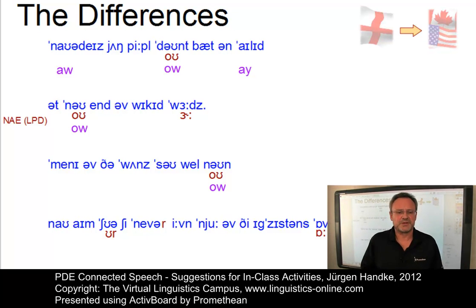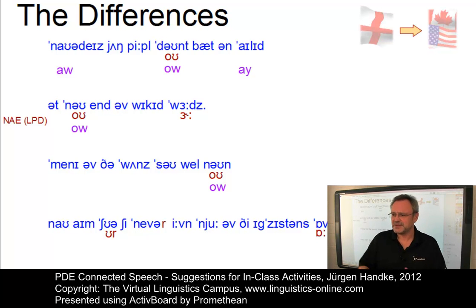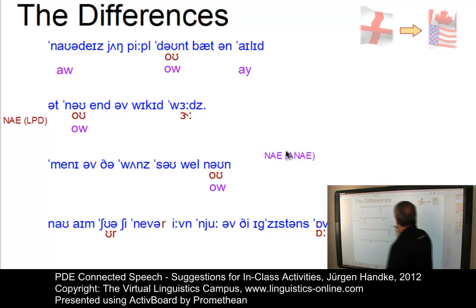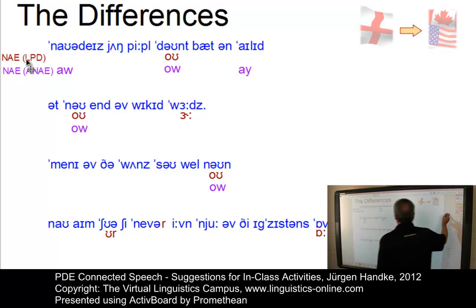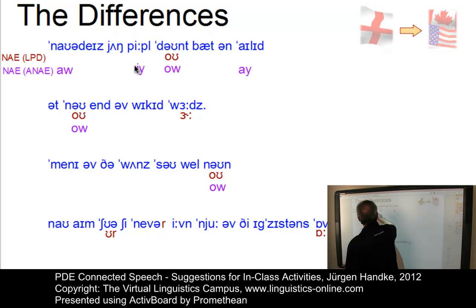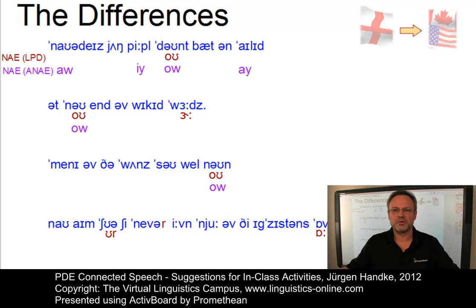You would now outline the differences between the various types of transcriptions in class. You can very well do this using the active auditorium — two students come to the front, one moving the items on the board or writing down the solutions on a traditional chalkboard, the other student triggering the answers from the audience. So now we have the two types of transcriptions side by side.